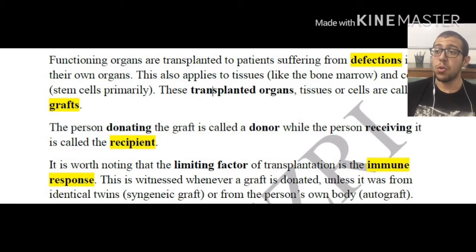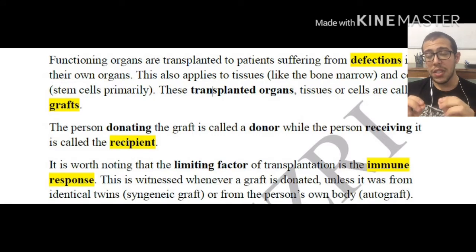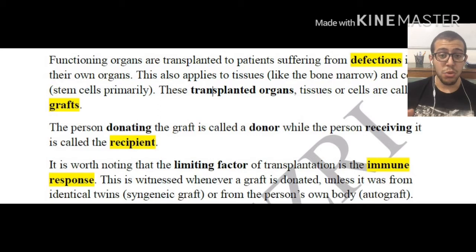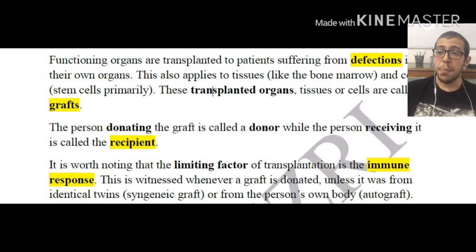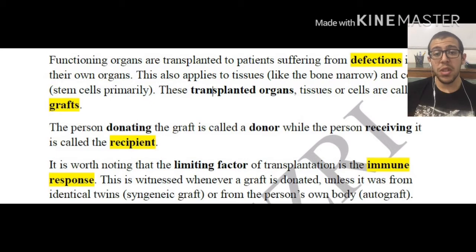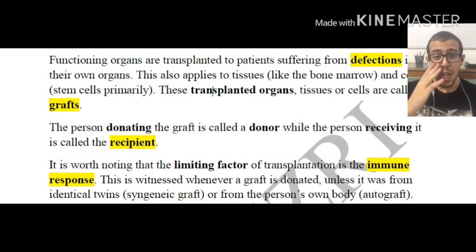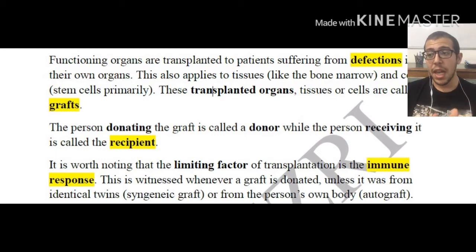These transplanted organs, tissues, or cells are called grafts. It is not only organs that are transplanted — tissues and cells are as well, and even these can induce immune responses against them. The person donating the graft is called the donor, and the person receiving it is called the recipient. It's very important to get familiar with these terms.